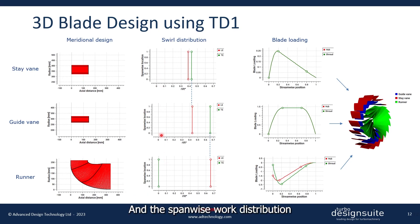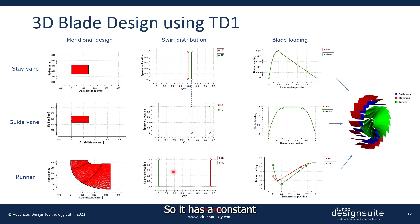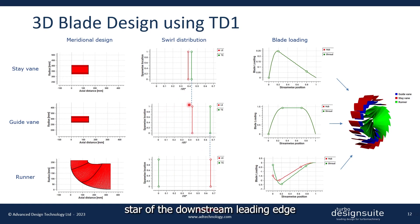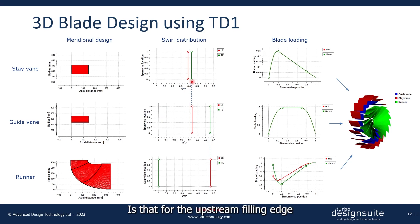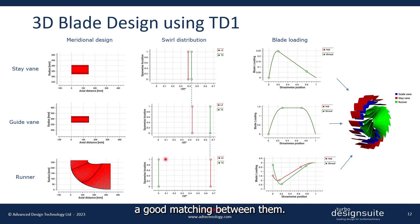The spanwise work distribution for each of these components is free vortex, so it has a constant value from hub to shroud. The RBT* of the downstream leading edge is always kept the same as that for the upstream trailing edge for all components, and this ensures good matching between them.